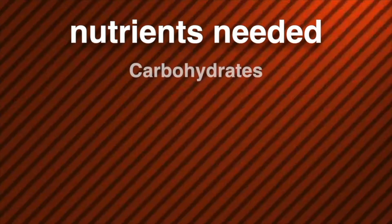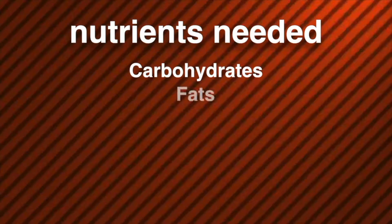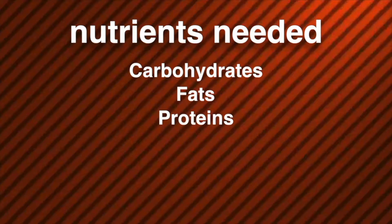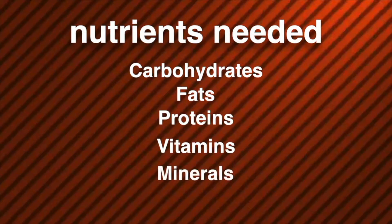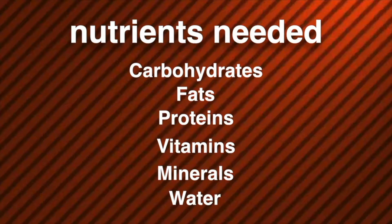There are six kinds of nutrients that everybody needs. They are carbohydrates, fats, proteins, vitamins, minerals, and water. Let's look at each one.